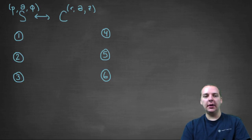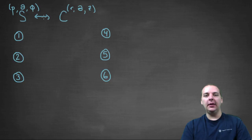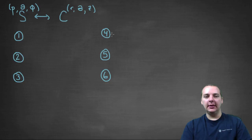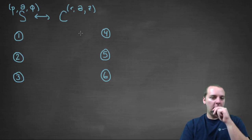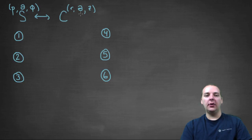For the first set of three equations, we're going to assume we're given rho, theta, and phi, and we're going to try to find r, theta, and z. Then for the second set of three equations — four, five, and six — we'll do the reverse: we'll say we're provided r, theta, and z, and we've got to find rho, theta, and phi.